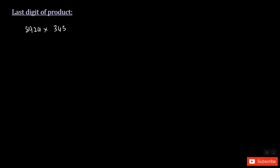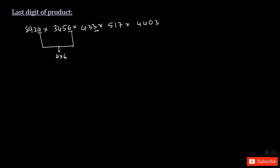To find the last digit of a product, let's take an example. If I have a number like 8924 times 3456 times 433 times 517 times 4403 — the question is: if you multiply all these numbers, what would be the last digit of the result? To find the last digit, just take the last digit of every number. So the last digit here is 4, the last digit of this one is 6. Multiply them: 4 times 6. Then in the same way, make a pair and take the last digits — 3 times 7 — and here there are no other numbers available to make a pair, so take it as it is.